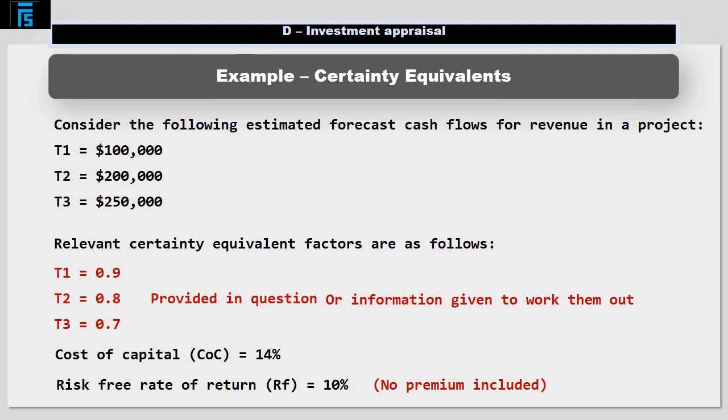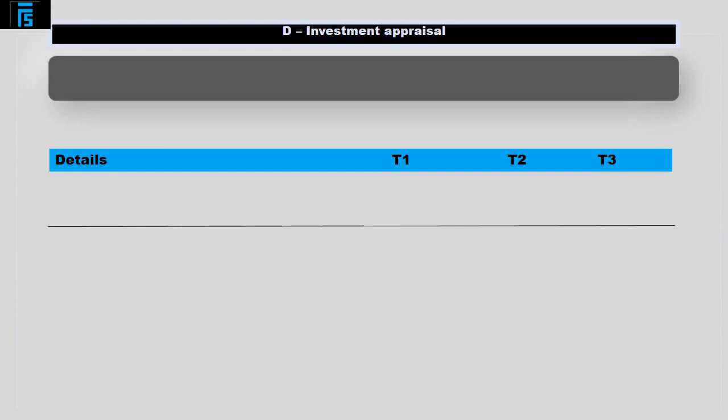Suppose the cost of capital is 14% and the risk-free rate of return is 10%. The risk-free rate is the rate of return required to compensate investors for interest and inflation only, i.e. no premium is included for risk. The present value using certainty equivalent will be calculated as follows.